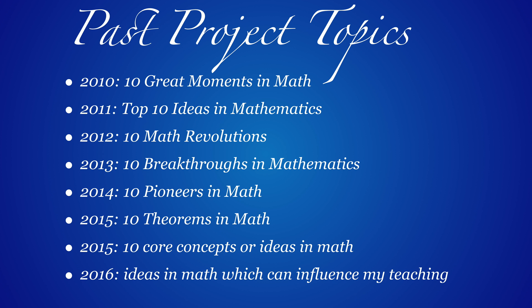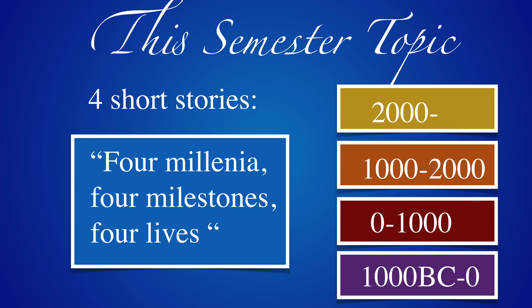We have a project. Traditionally we have at the end a project, and here are the titles from the last eight times. This year we have something new — I would like to see four short stories. The title of the project is Four Millennia, Four Milestones and Four Lives. It should cover the times minus one thousand to zero, zero to one thousand, one thousand to two thousand, and two thousand to now.